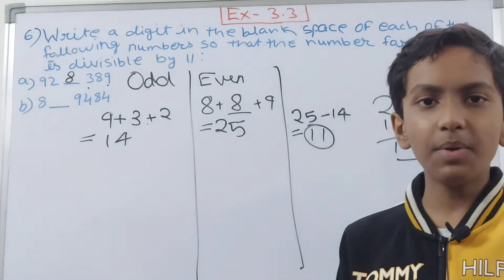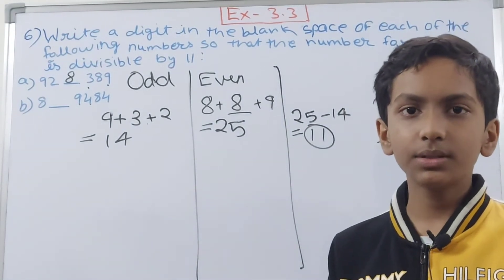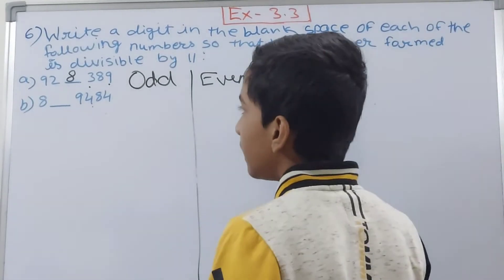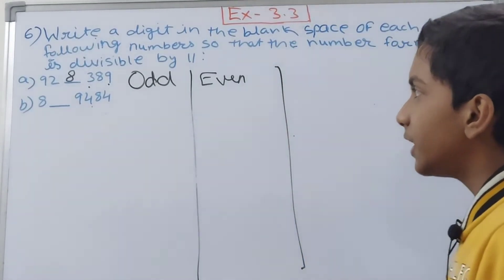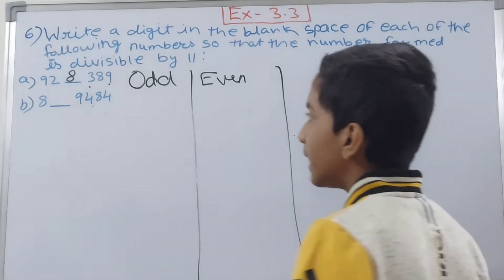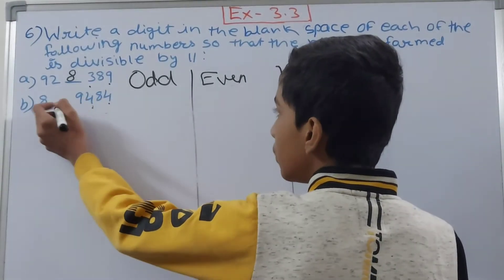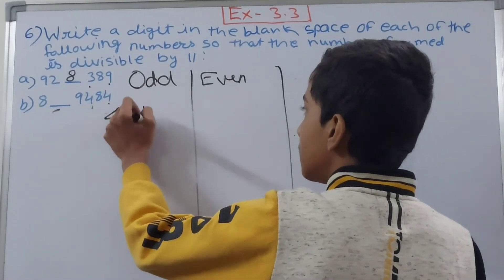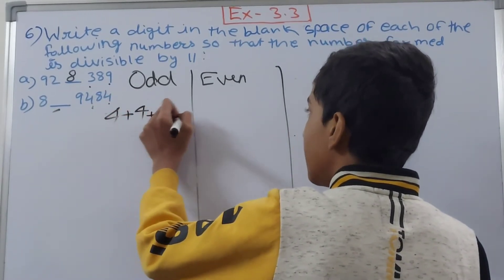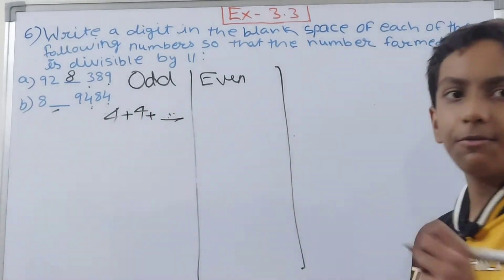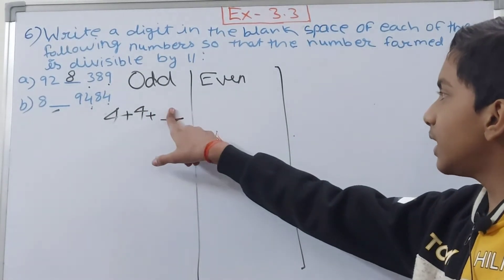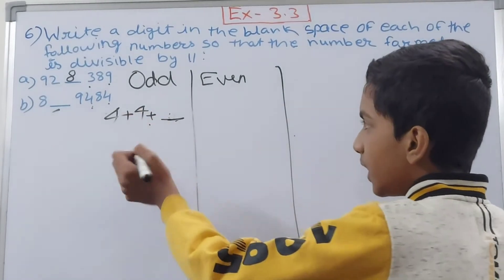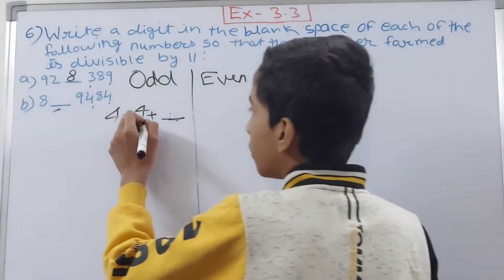Now let's come to the part b. We have 8, blank, 9, 4, 8, 4. First we will add the digits at odd places: 4 and 4 and this blank also. So 4 plus 4 is 8, and plus here there will be the number which you have to add. So basically till now we have got that this is equal to 8 plus the blank digit.